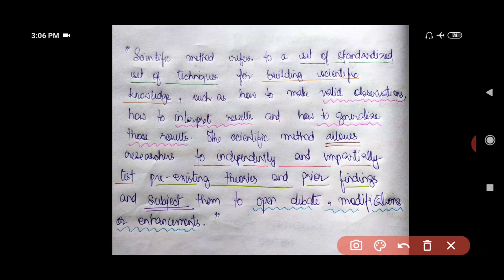Your aim is to build scientific knowledge such as how to make varied observations, how to interpret results and how to generalize those results. The scientific method allows researchers to independently and impartially test pre-existing theories and prior findings. You are definitely allowed to put old theories to test and you subject them to open debates, modifications or enhancements.